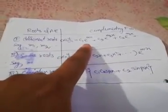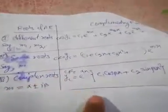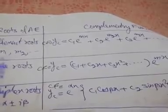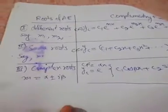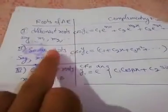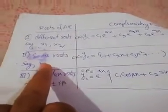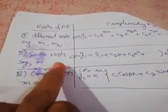If the roots of the auxiliary equation are different, say m1 and m2, then the complementary function will be c1·e^(m1·x) plus c2·e^(m2·x) plus so on, depending on the number of roots.